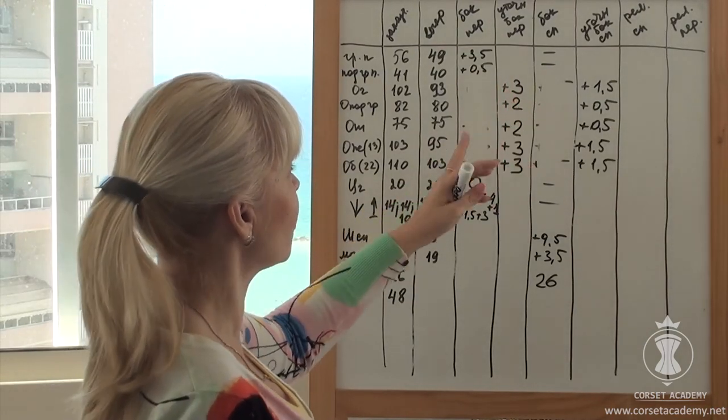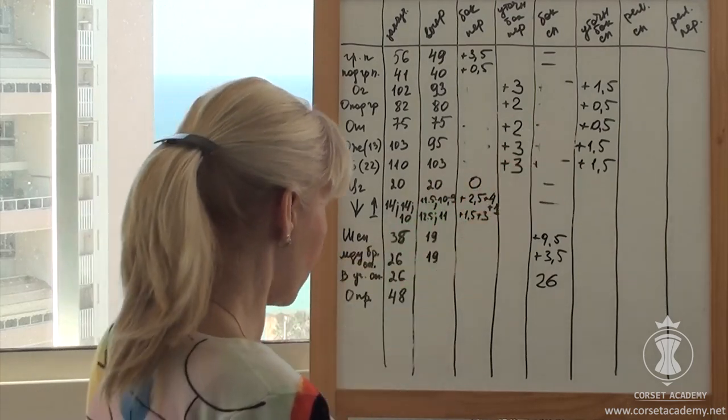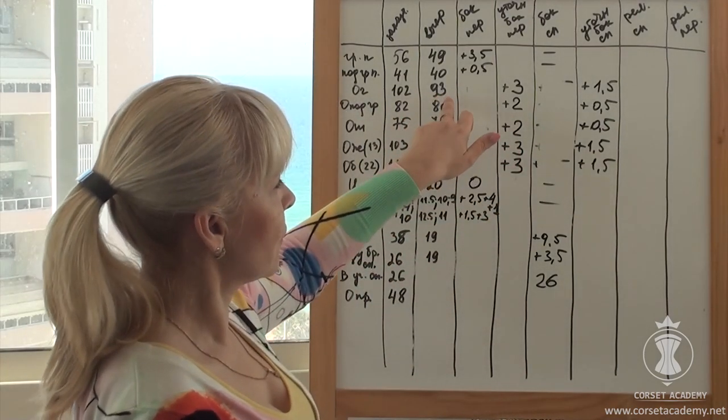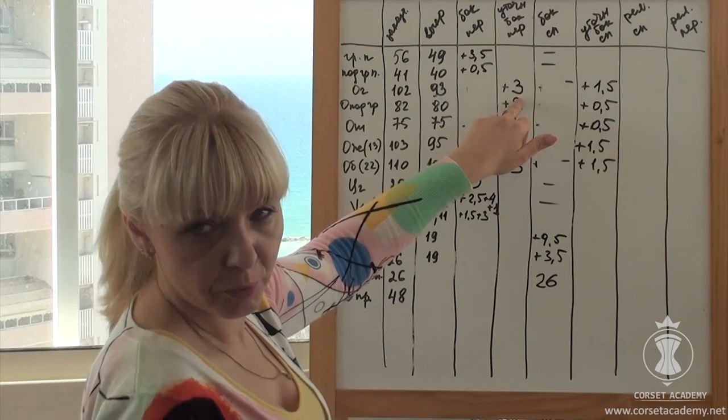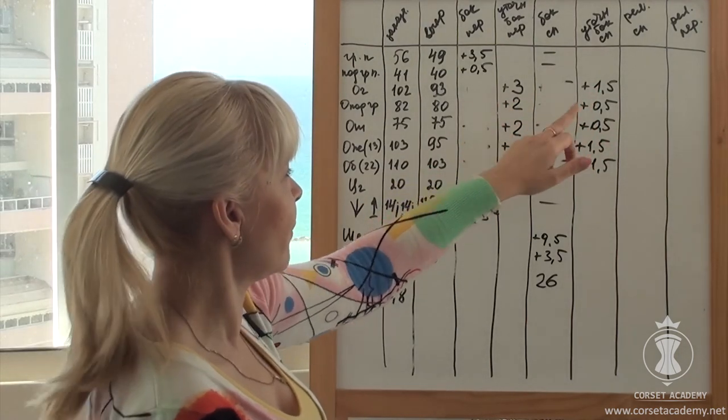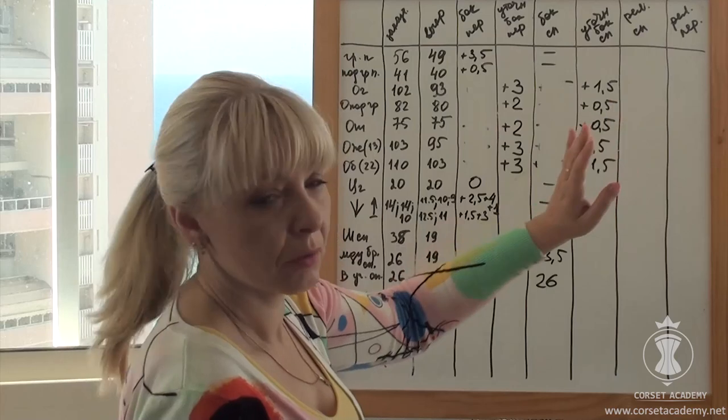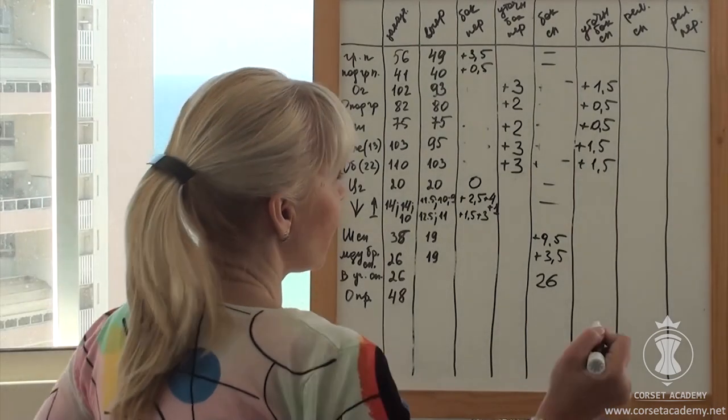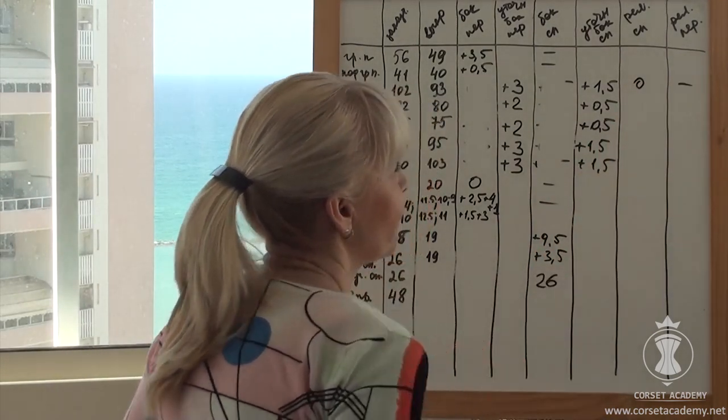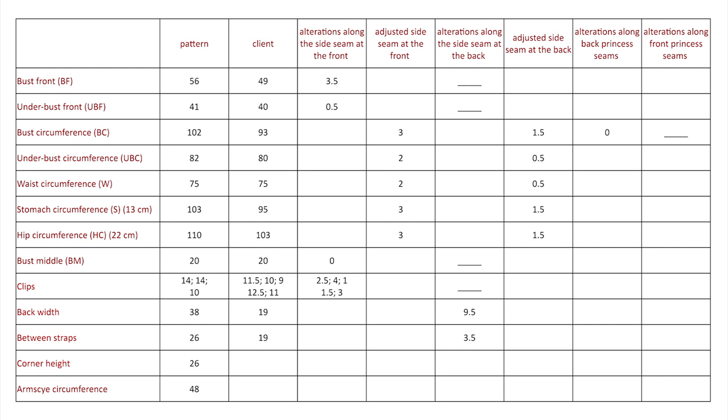Bust circumference. It is 102 cm on the client and 93 cm on the pattern. We have expanded the pattern by 3 cm from each side, a total of 6 cm, and by 1.5 cm from each side, a total of 3 cm, which makes 9 cm together. 93 cm plus 9 cm equals 102 cm. 102 cm minus 102 cm equals 0 cm. We have already reached the client's measurements. Nothing needs to be added in the princess seam of the back, so I write a 0 in column 8. And we can't add anything in the princess seam of the front, so I write a dash in column 9.